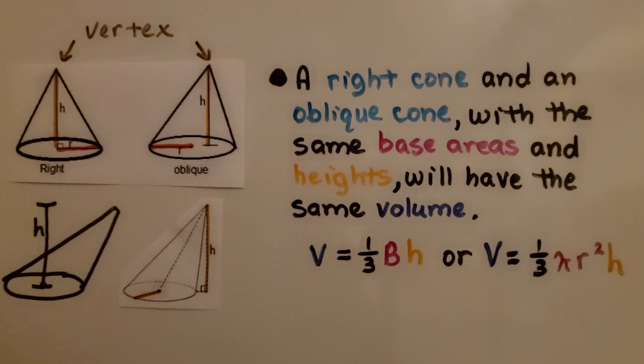For an oblique cone we can't go straight up the center to the vertex. We go from the center of the base perpendicular until we get to that height. That would be its height.